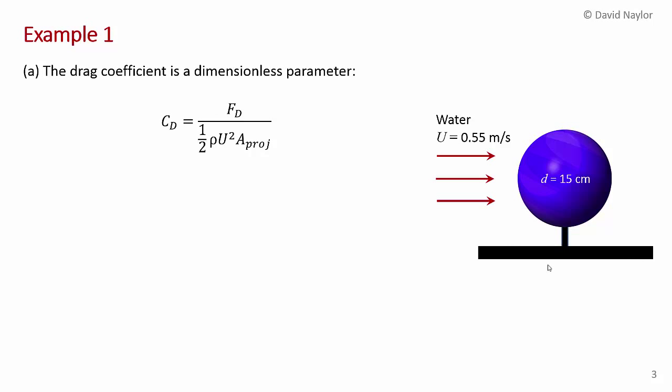The drag coefficient Cd is the ratio of the drag force Fd divided by one-half rho times the free stream velocity squared times an area. From Bernoulli's equation, one-half rho u squared is the stagnation pressure — the pressure at the front stagnation point of the sphere as the flow decelerates from the free stream velocity to zero. That pressure times the frontal area represents the pressure force on the front of the sphere, and it can be used to non-dimensionalize the drag force Fd.